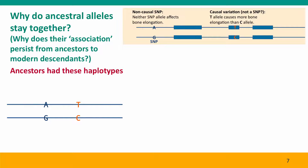The big problem that understanding inheritance raises for us is: why do these ancestral alleles stay together? Why do we find the A allele at the SNP in people who have the T allele in the bony elongation gene and are therefore going to be taller? And we find the G allele at the SNP primarily in people who have the C allele of the bony elongation gene. Well, the ancestors of all of the people in the study had these two haplotypes. Some of their chromosomes had the A allele at the SNP and the T allele at the bone growth position, and the others had the G allele at the SNP and the C allele at the bone growth position. This is what we call an ancestral haplotype or an ancestral association.